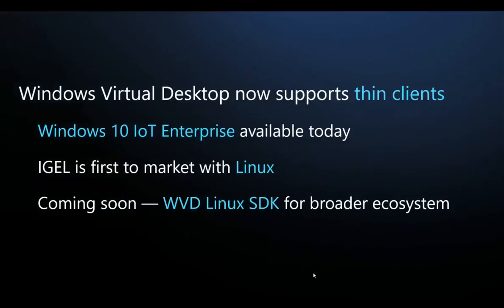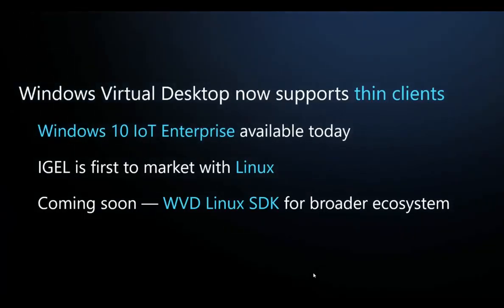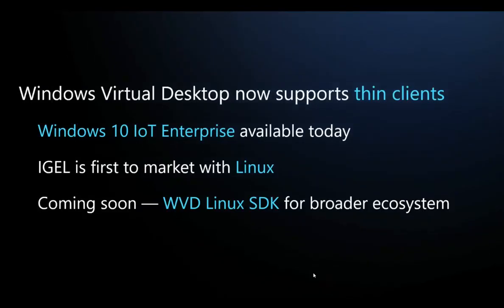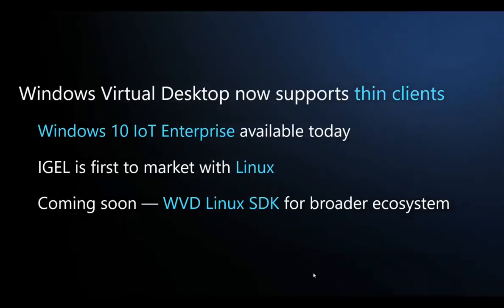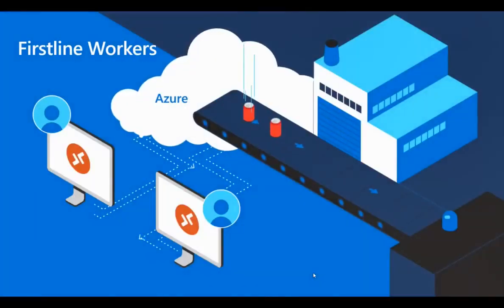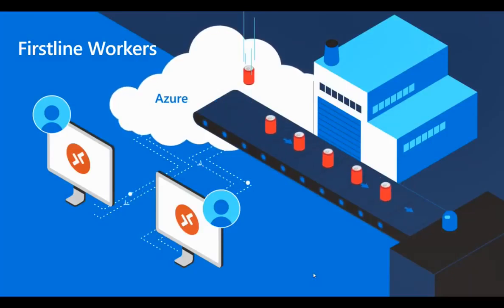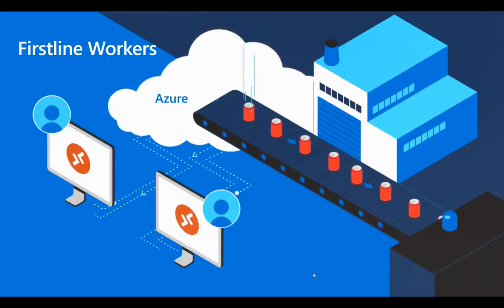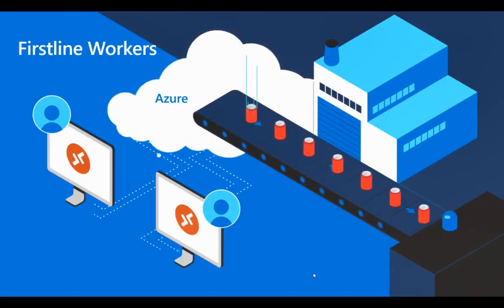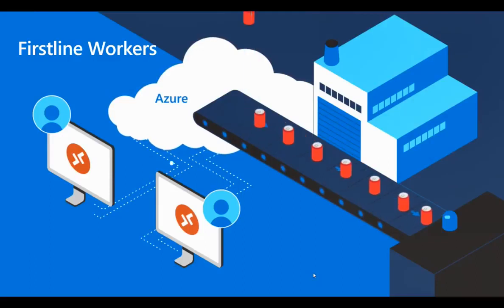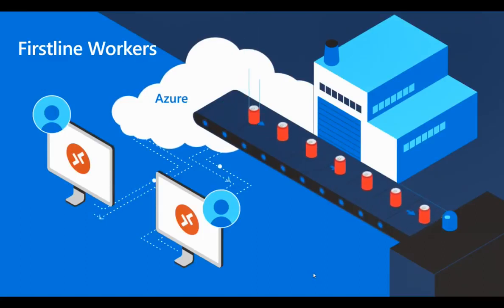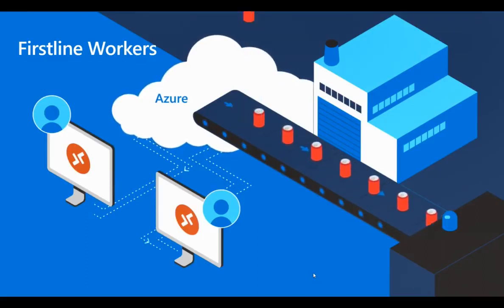Windows Virtual Desktop is supported on thin clients on Windows 10 IoT Enterprise and IGL for Linux, and will very soon also be supported on WVD Linux SDK. Each time workers access any compute, a new workload spins up in the background to give them the most relevant access. The moment users are done, all the additional compute deployed in the backend is terminated — ensuring cost savings.